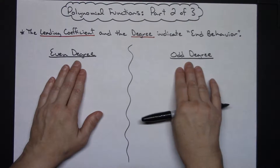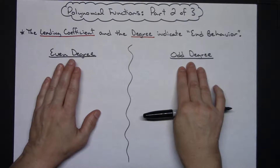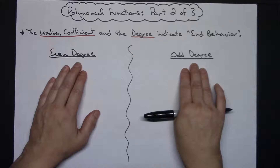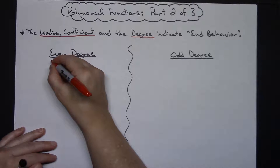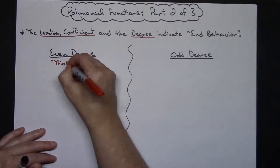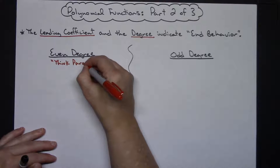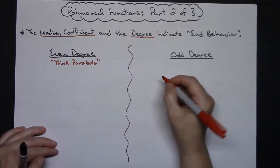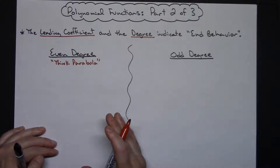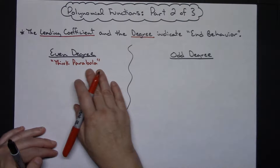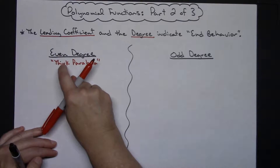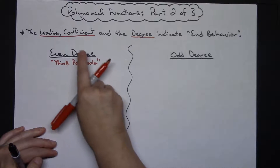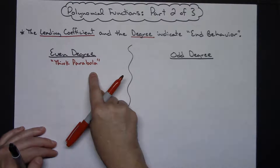We've got two basic categories. Your degree is either going to be even or odd — those are your only two choices. For any even degree, I like to tell students to think about a parabola. You've only got a couple different scenarios: the parabola is either upright or upside down. The same end behavior applies whether it's x squared, x to the fourth, x to the sixth, or x to the eighth — as long as you have an even degree, they all resemble the parabola.